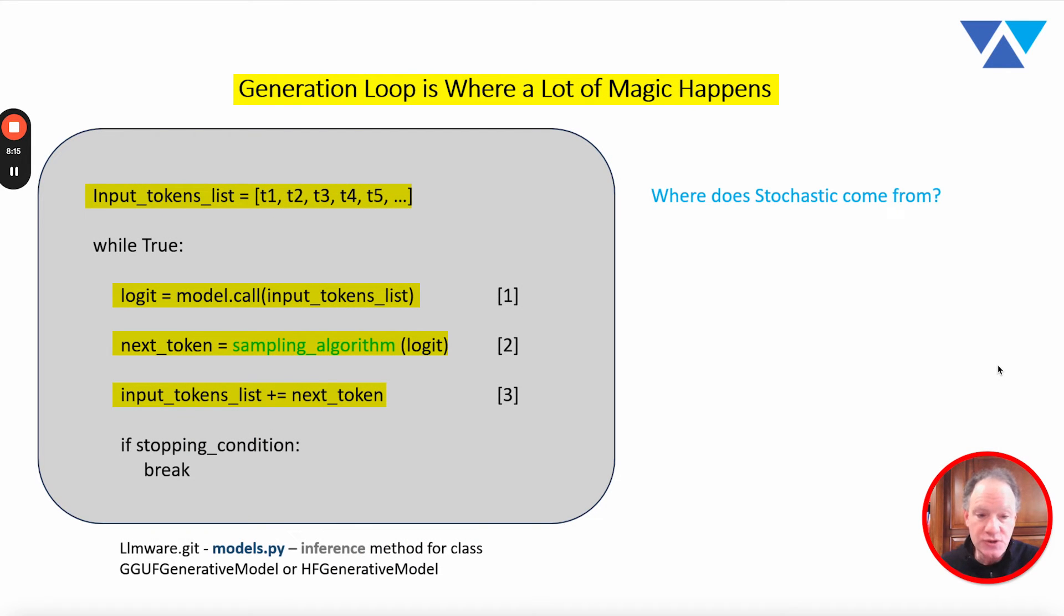Where is the stochastic element coming from? Well, it's coming from this sampling algorithm. It's coming from the algorithm, the set of rules that we are applying to convert that probability distribution that we got as the output from the model into the next token that we're going to add to our input tokens and pass back into the model in the next cycle.